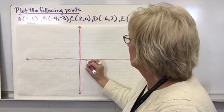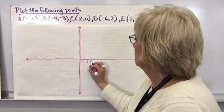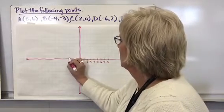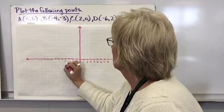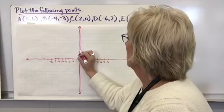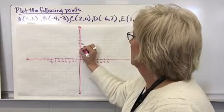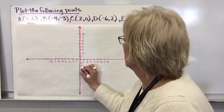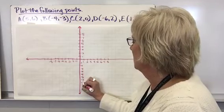I'm going to count out eight units in each direction on both axes and label them. On the x-axis I'll label one through eight going right and negative one through negative eight going left. On the y-axis I'll go up one through eight and down negative one through negative eight. Take the time to label these when you're drawing a coordinate plane — it really helps.